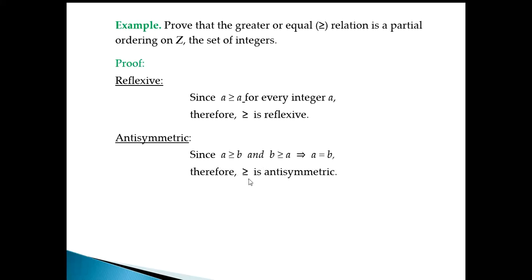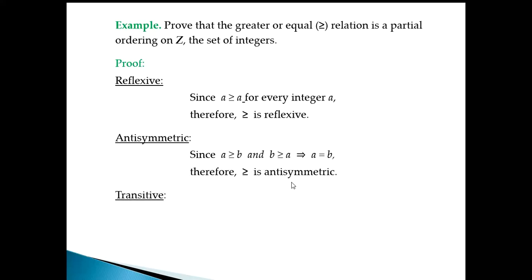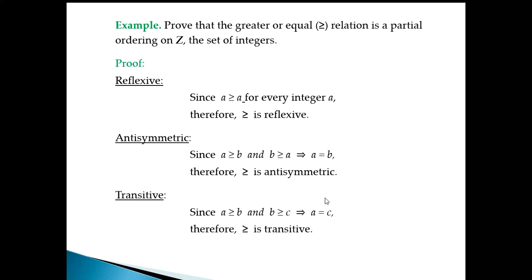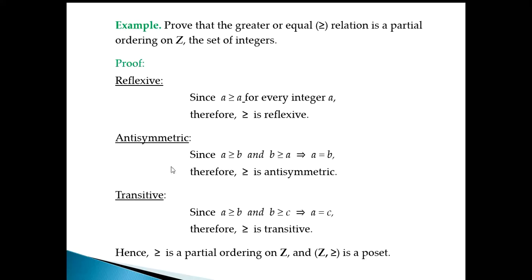For transitive: we take elements a, b, c from Z. If a ≥ b and b ≥ c, then a ≥ c. This holds for integers. Therefore ≥ is a transitive relation.